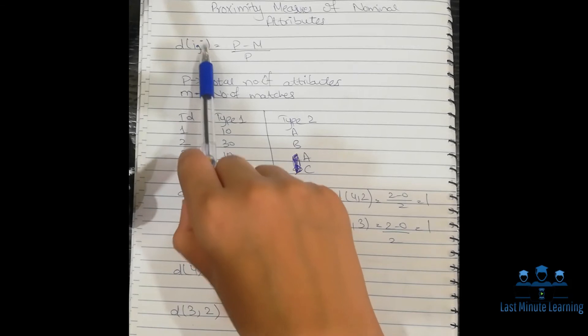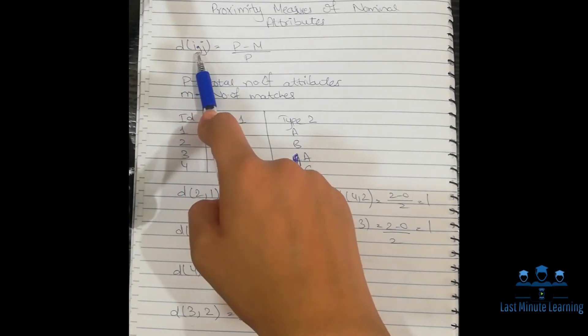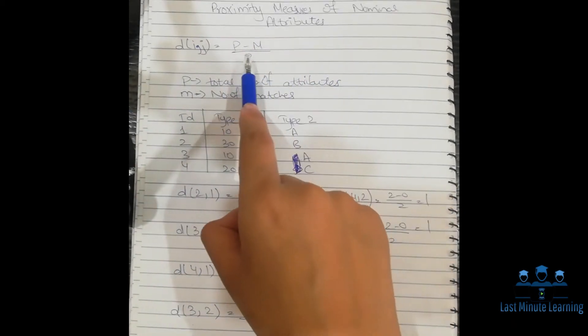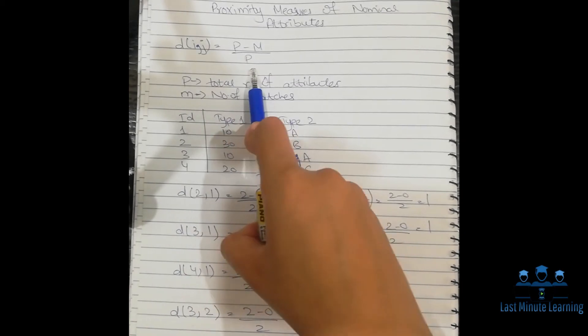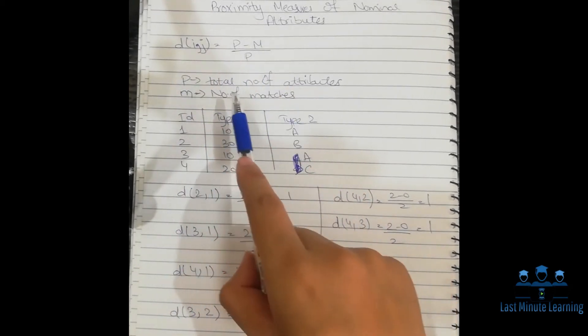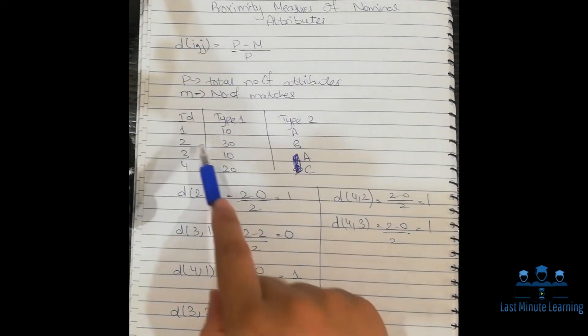We have written d(i,j), which shows us that we have to measure the difference between i and j. The formula for nominal attributes is (p-m)/p. What is p? P is the total number of attributes, and m is the number of matches in the types given to us.